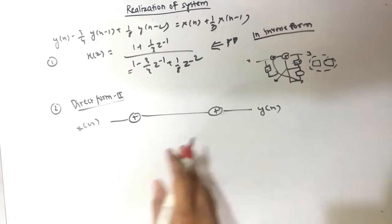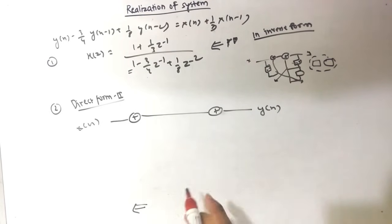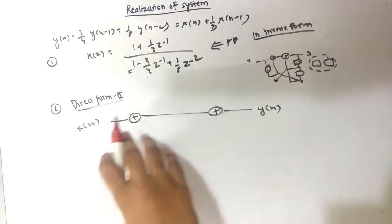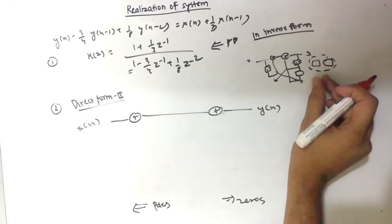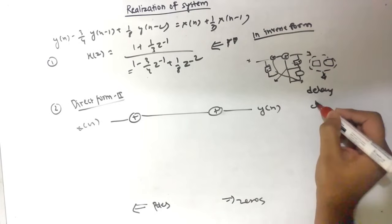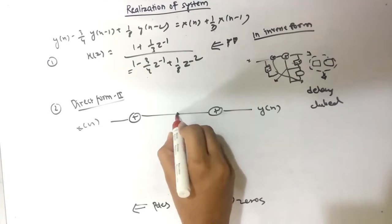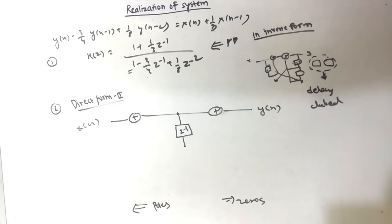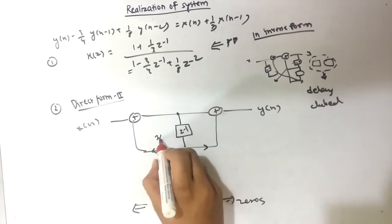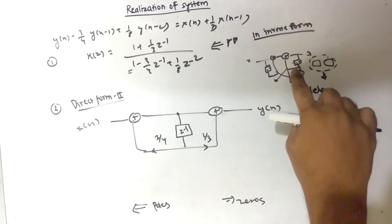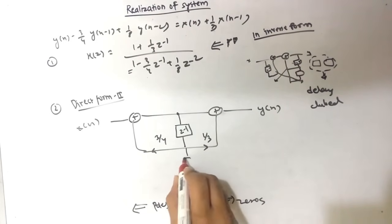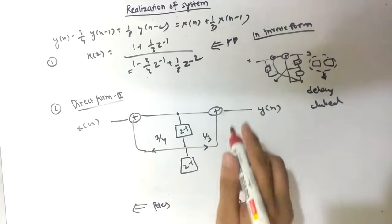In Direct Form 2: the poles come on the left side and zeros shift to the right side. We club the common delay part. The first delay is Z⁻¹. On the left side of the delay node we have the pole coefficient +3/4, and on the right side we have the zero coefficient +1/3 — whatever coefficients were on each side in Direct Form 1 remain on their respective sides here.